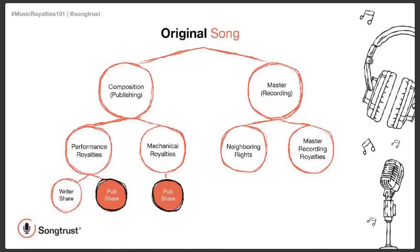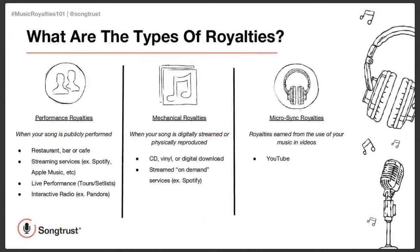On the right side, for the master recording, which is broken down into neighboring rights and master recording royalties — also referred to as mechanical royalties, though not to be confused — there are mechanical royalties owed to both the composition and the master recording. Performance royalties are generated whenever your song is publicly performed or played in a public space. This could be a live performance at a huge venue, a live performance at a restaurant, bar, or cafe, your music being played at a venue or a bar, streaming services, or interactive radio — all of those would generate a performance royalty.